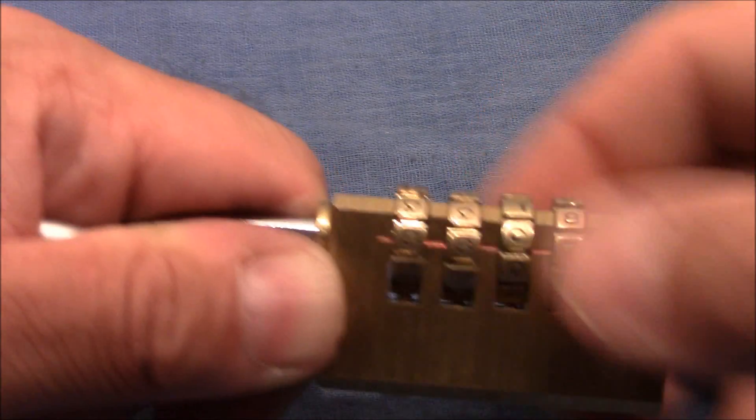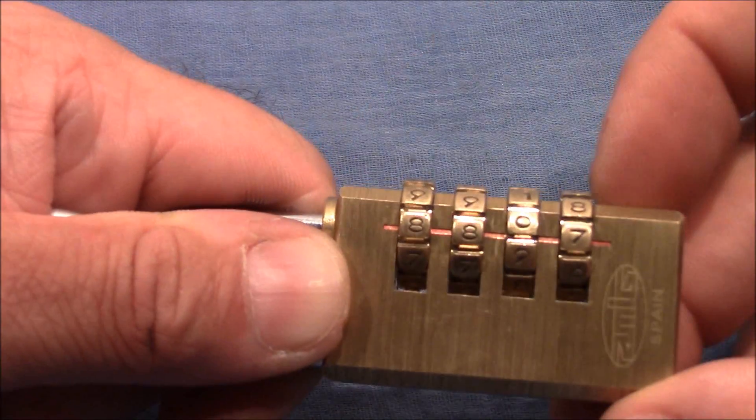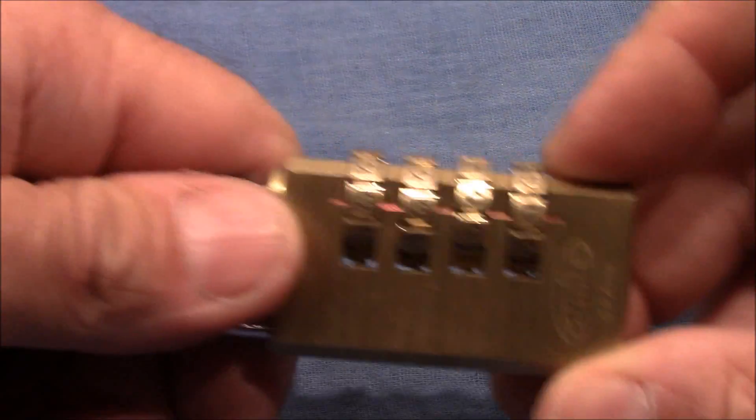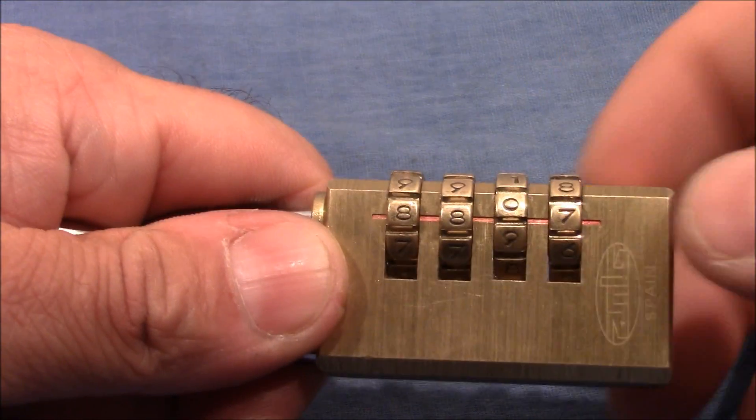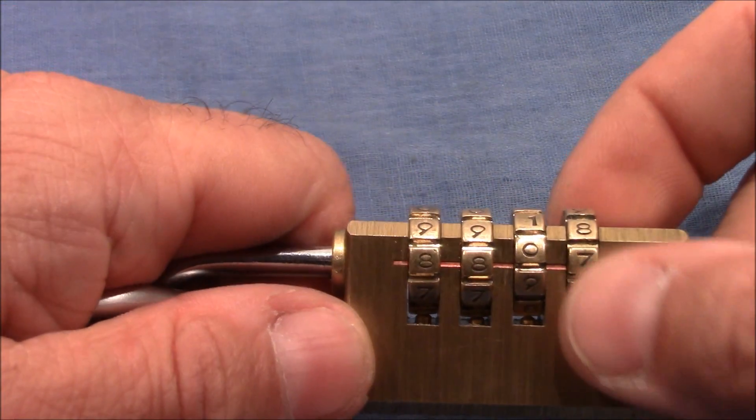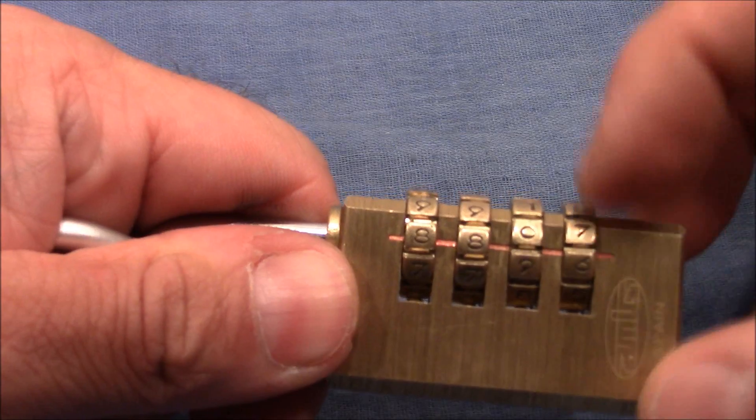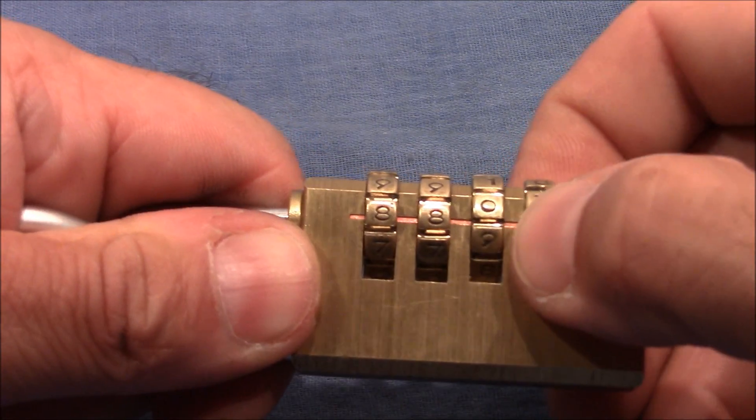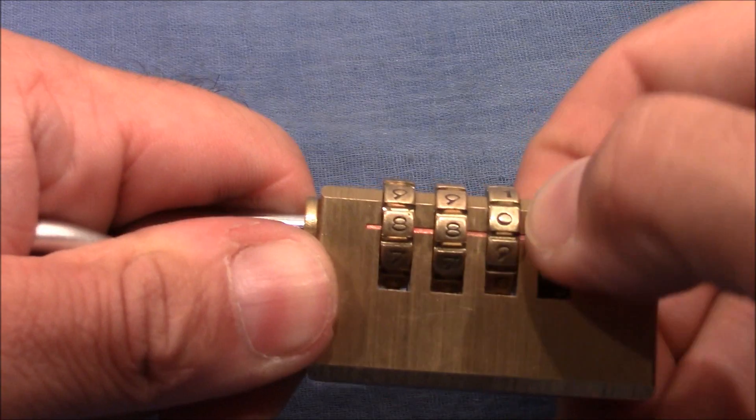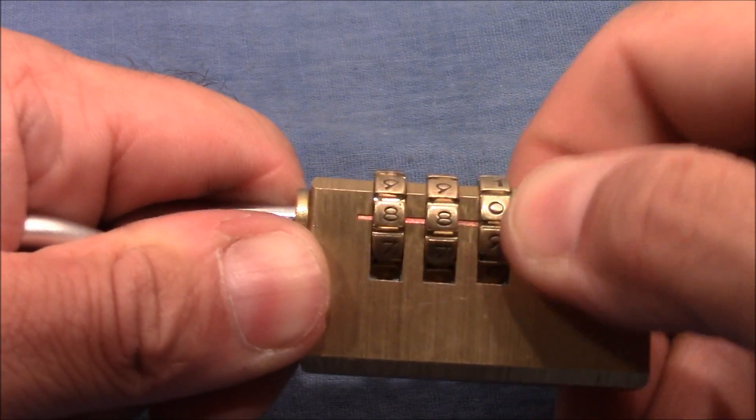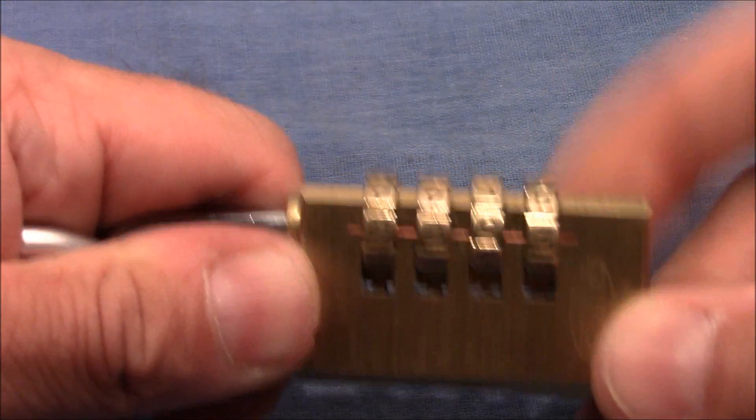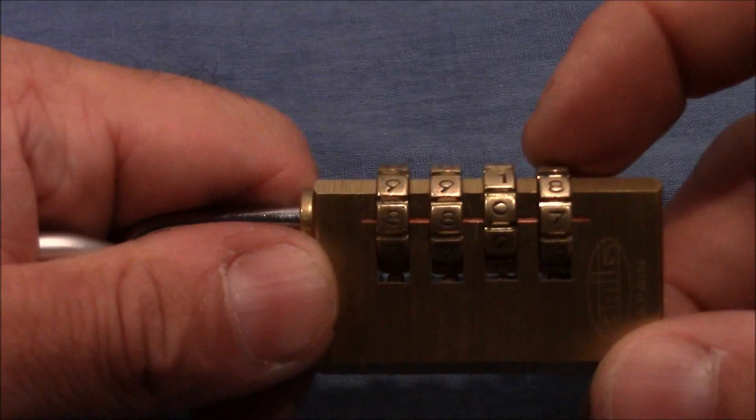Alright, so now we have this situation. All wheels are at some gate and the lock is not open. So I start over again with the first wheel, move it away from the gate, apply tension and turn it.